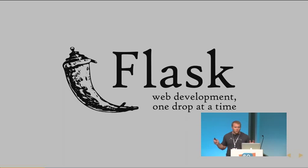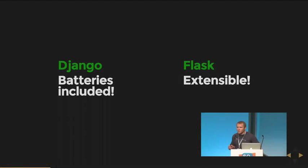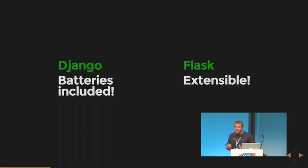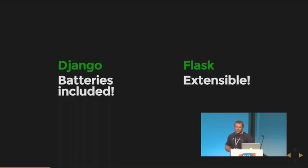These two frameworks represent opposite ends of the spectrum. On one side you have Django, which says batteries included — everything you want to do when creating a web application should be available in the core framework. On the other end of the spectrum is Flask, which has a small core with a lot of extensibility, making it easy to add extensions. For example, not every web application needs user authentication. Flask does not have an official user authentication module built into core — there are extensions like Flask-Login, but it's a separate dependency. Whereas Django has an official way to do user authentication built in.